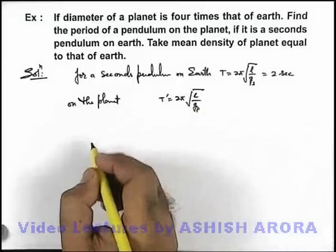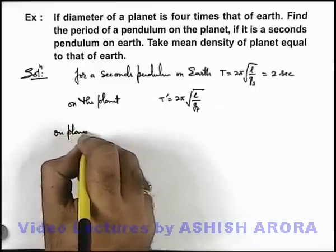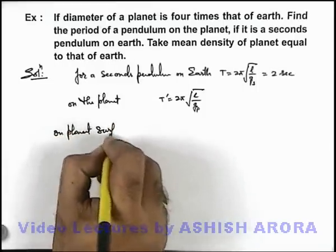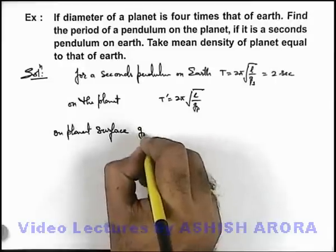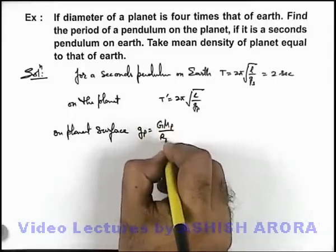And to calculate this gₚ we can simply state on planet surface, gravity gₚ we can write as G times mass of planet by radius of planet squared.